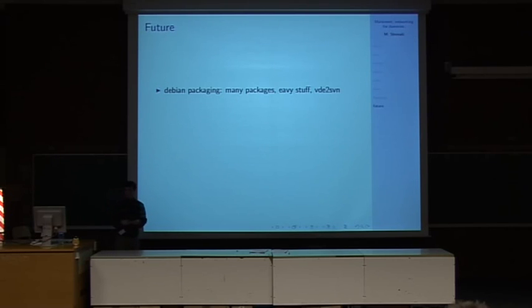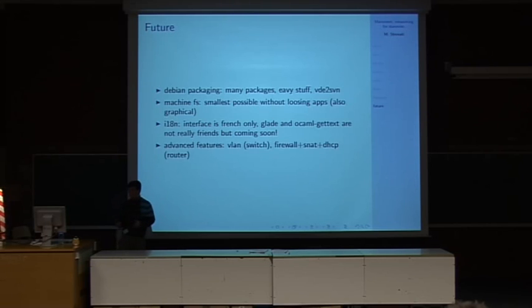And what we see for the future: we're currently working on Debian packaging. That's almost done although we have some problems because we have some really heavy stuff to package, for example file systems. And we also rely on other software, so we're waiting for the development cycle of VDE. We're working on machine file systems to make them image modular. I'm working on internationalization, or at least I'm trying. And we're putting in mind some advanced features like firewall, NAT and DHCP for routers. We're also thinking of new devices, for example IP phones for SIP and stuff like that.